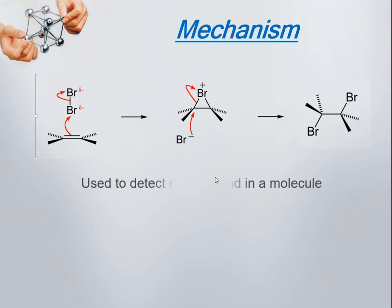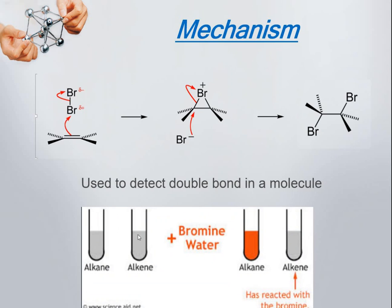This reaction is very important because it is used to detect a double bond in a molecule. When you add brown bromine water to a sample, it will not react with alkanes, but with alkenes the brown color of bromine is discharged, confirming the presence of a double bond.